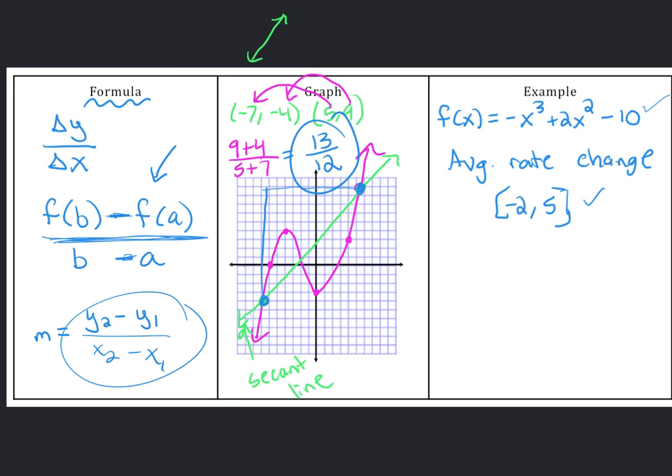So in algebra 1, it was always just to find the slope between two points. With this one, we have a function and an interval, so we have to find our two points. What we need to do is that difference quotient. So we have to find f of 5 minus f of negative 2 over 5 minus negative 2.